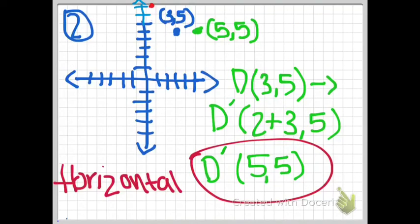Now an example for horizontal translation. You start with point d at (3, 5). Then you add 2 to the x coordinate, giving 3 plus 2 equals 5, and you get (5, 5). So d at (3, 5) changes into d at (2 + 3, 5), which equals d at (5, 5).